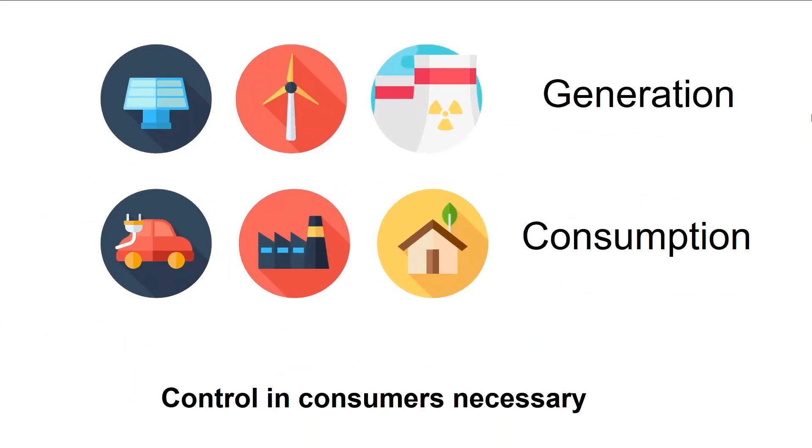However, in current grids, mostly generators are controlled, while consumers are free to consume as they please. We found that control in consumer nodes is necessary to guarantee the aforementioned positive effects of control, including curing Braess Paradox.